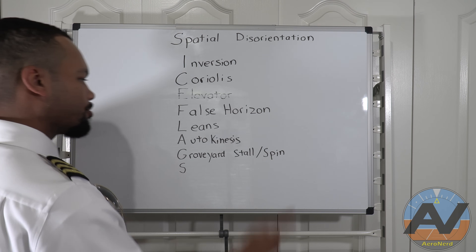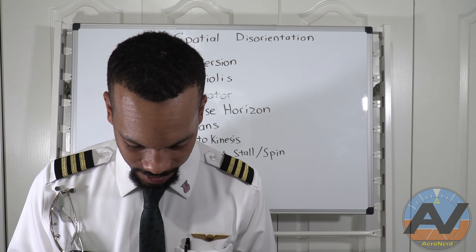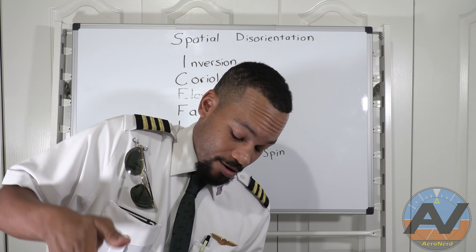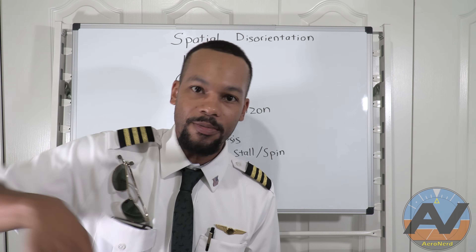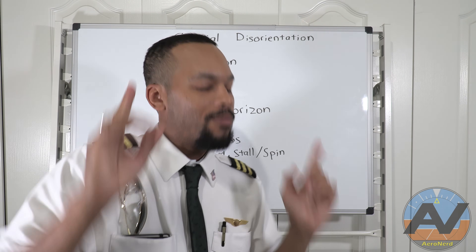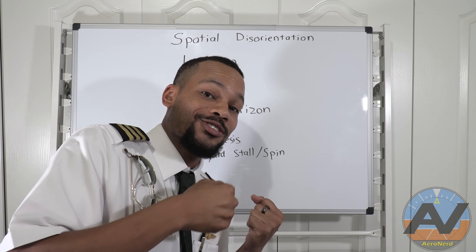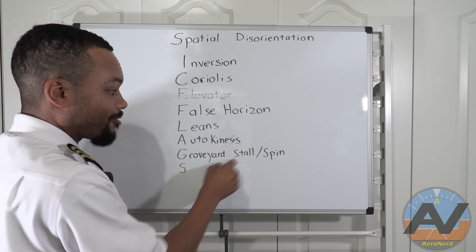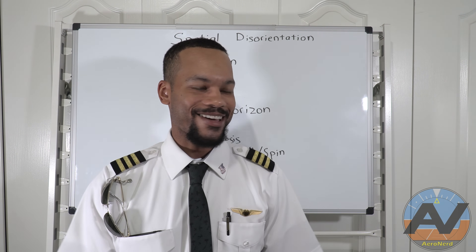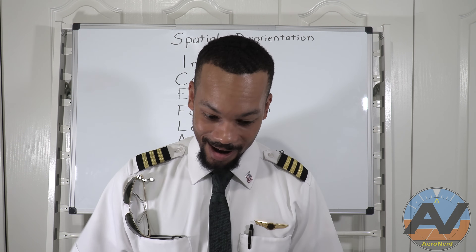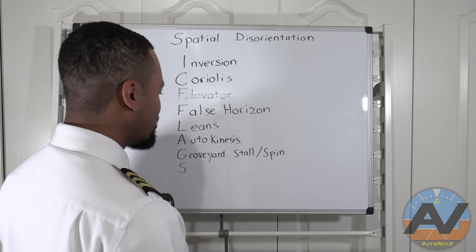Graveyard stall and graveyard spin — let's go into the stall first. Graveyard stall: you're in a bank, losing altitude, and you don't realize you're in a bank. You just see your altimeter dropping and dropping. So what do you do? You pitch up. But when you pull up while you're already in a bank, you'll likely enter an accelerated stall — putting yourself right into the graveyard. That's why during unusual attitude recovery going down, we go power to idle, wings level first, and then pull and recover — so we don't enter a graveyard stall.